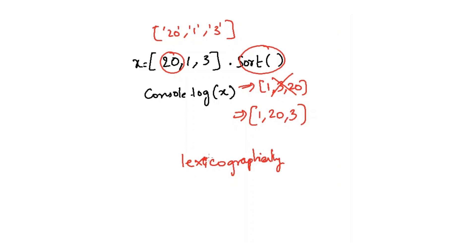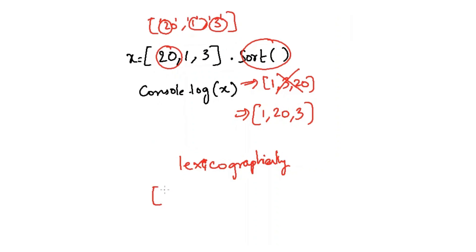Means it will consider the first character of each string. Means 2, 1, and 3. Now it will sort each of them alphabetically. Due to this, the output will become array of 1, 20, 3.